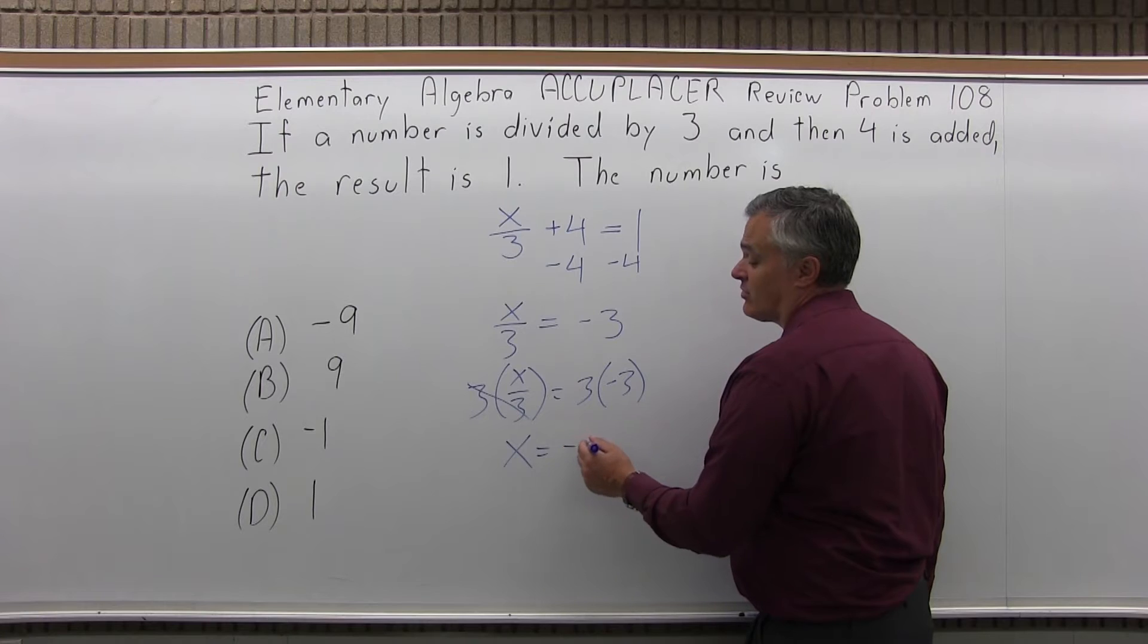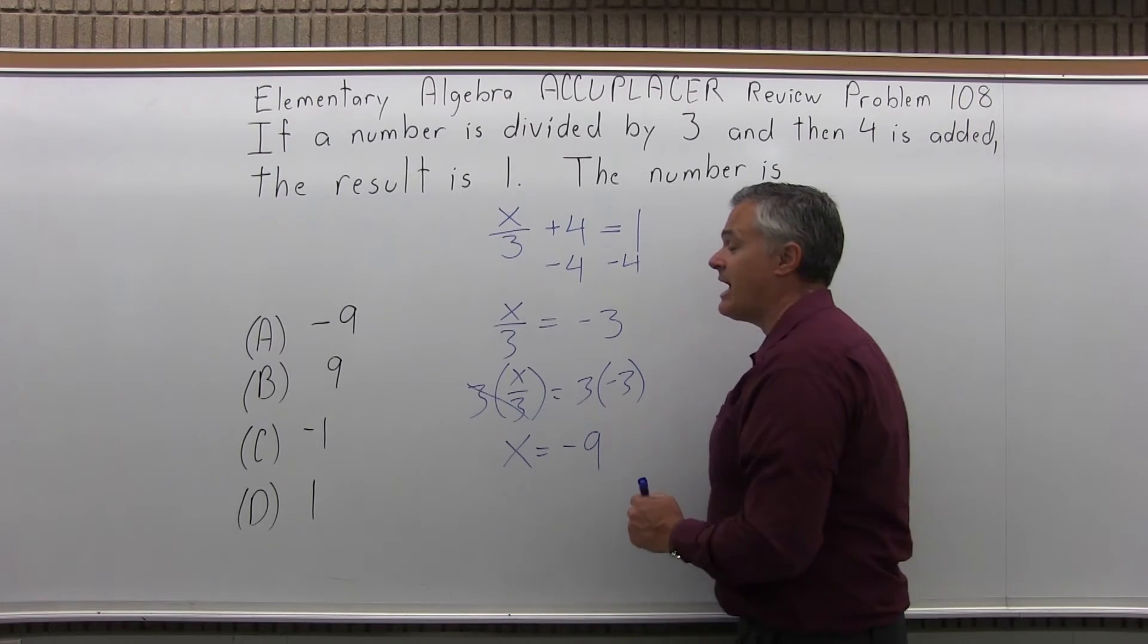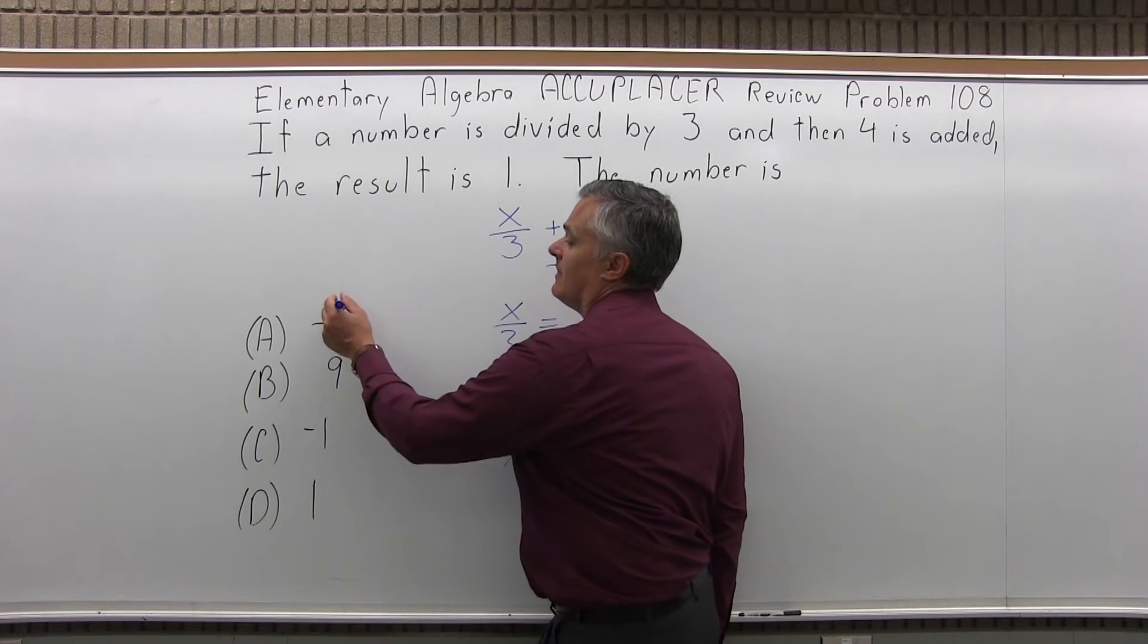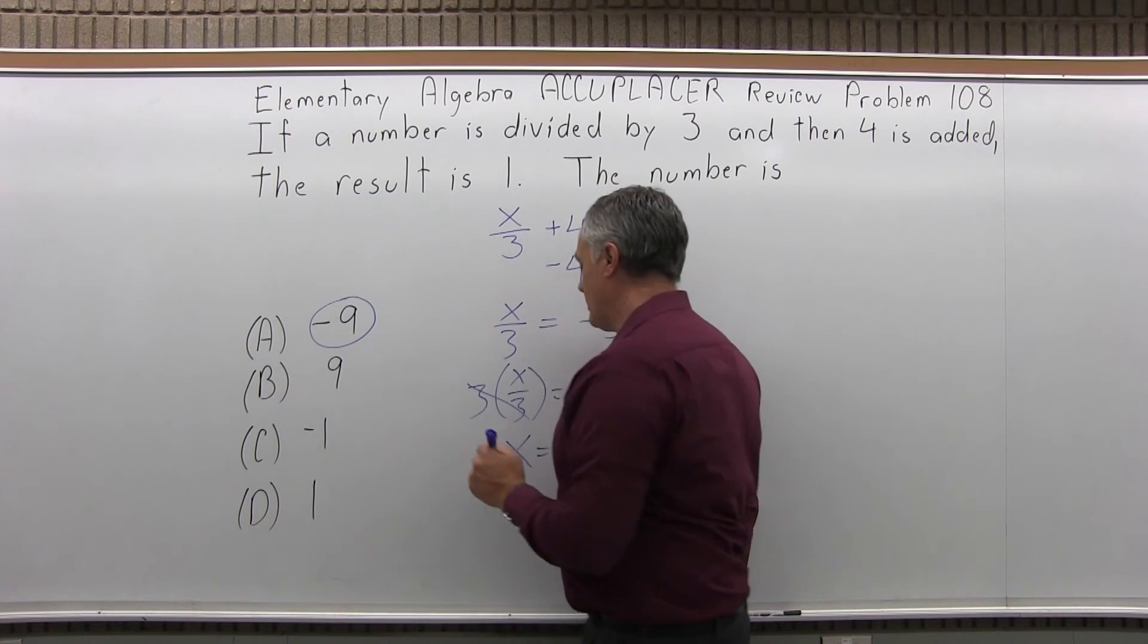And on the right, 3 times negative 3 would be negative 9. x is negative 9, which is one of my options. It's option A. And you can check that.